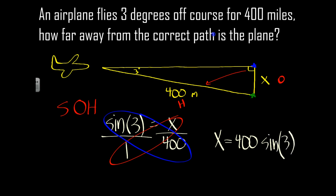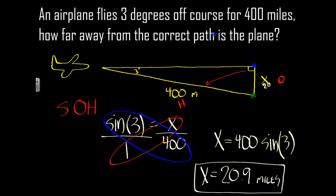Take my calculator, and I type in 400 times the sine of 3. So this plane flew 20 and 9 tenths of a mile off course, which looks to be about right if I look at the picture. That's probably about 20. Alright, so there's a few more examples that hopefully will help you out using our right triangle trig SOH CAH TOA. So that's it. Thanks.